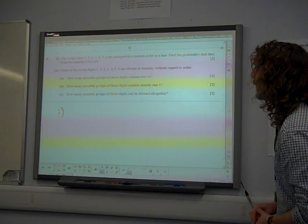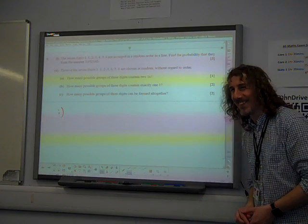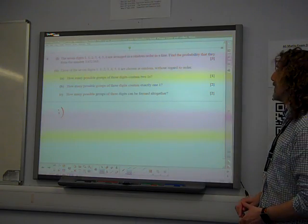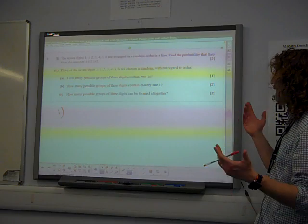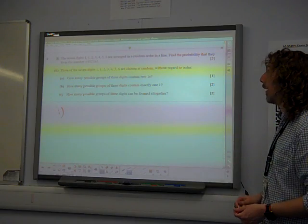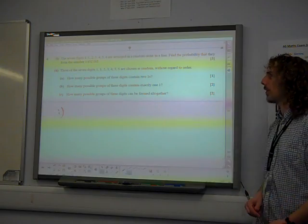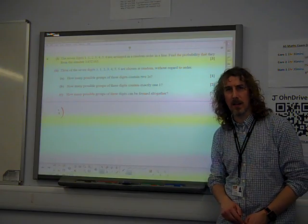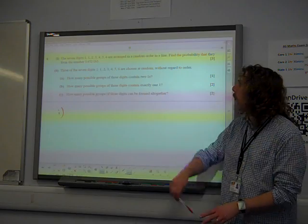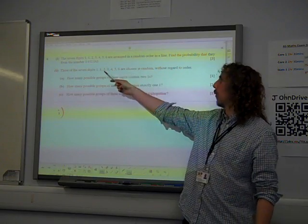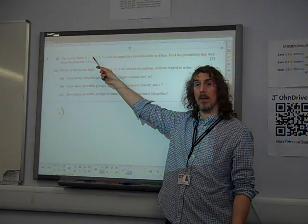Seven digits: one, one, two, three, four, five, and six are arranged in random order in a line. Find the probability that they form the number 1452163. Well, it's a slightly odd start to a question. It's an odd way of saying that that is one arrangement out of all the arrangements that could possibly give.